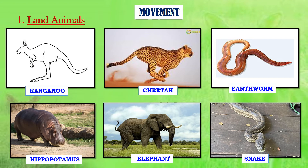Now, a question arises: why do animals move? Animals move around for various reasons — to find food, to escape or protect themselves from predators, or to find a mate. They also move to find suitable environmental conditions needed for their survival and breeding. Breeding means producing offspring.